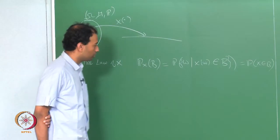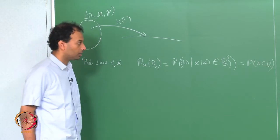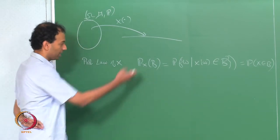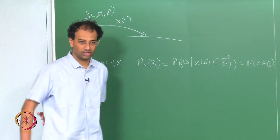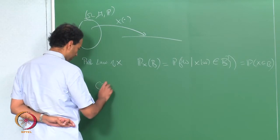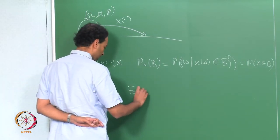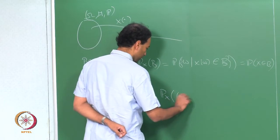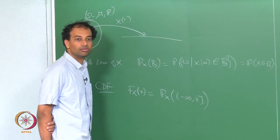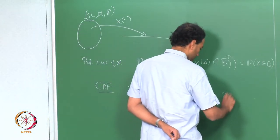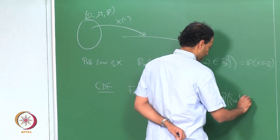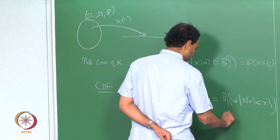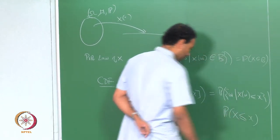We also said that the Borel sigma-algebra is generated by the pi-system of semi-infinite intervals of the form (-infinity, x]. So the probability measure P_X is also defined on the generating class of the Borel sigma-algebra. We gave it a name: the CDF. F_X(x) was simply the probability law of sets of the form (-infinity, x], which is simply the probability of omega for which X(omega) is less than or equal to little x.